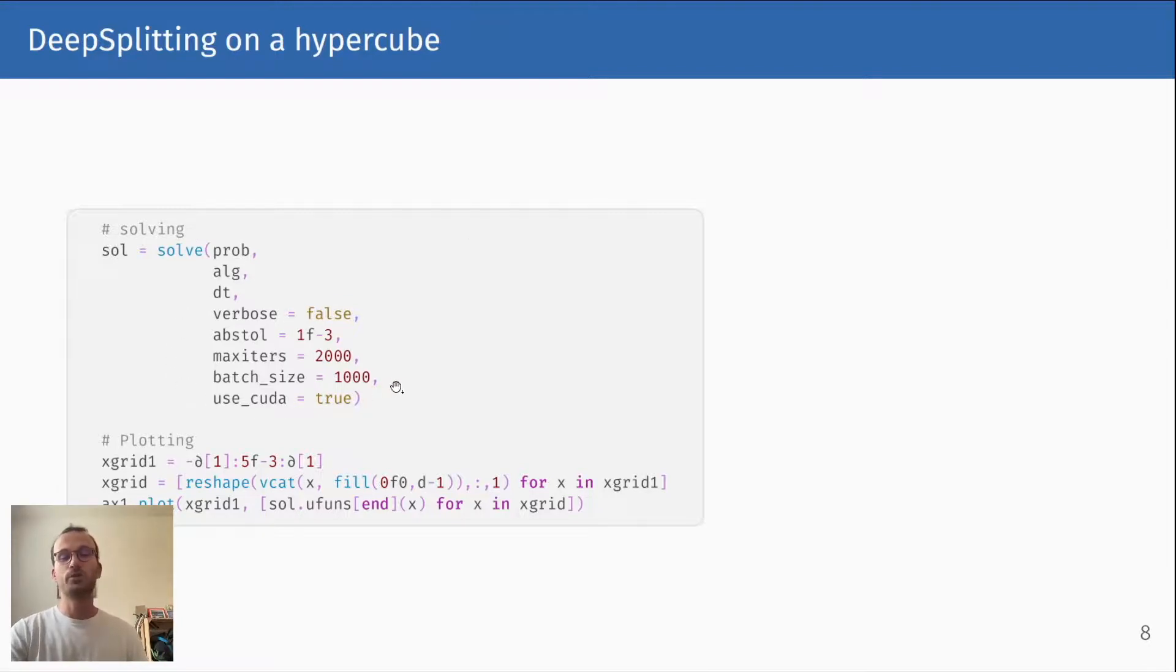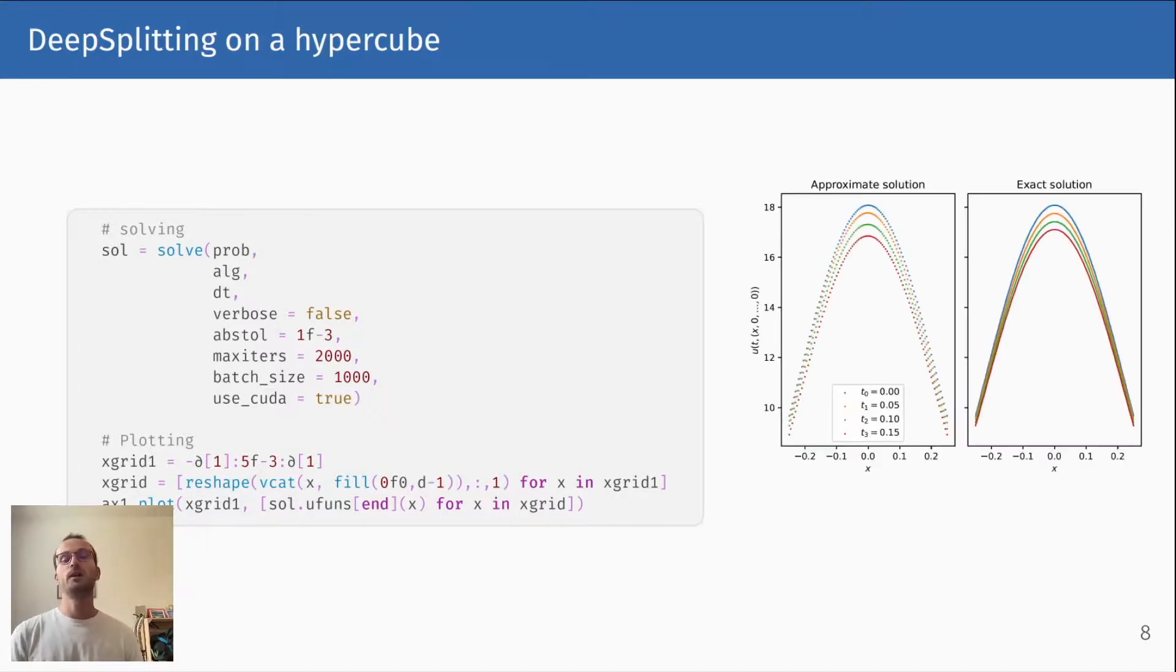Of course, you need to specify how many trajectories you want to simulate and how many iterations you want to perform to train the neural network. After a few seconds, you get the approximation, which I plotted here as a cross-section along one axis. But you have to really think that it's solved over a 10-dimensional domain, which is pretty crazy when you think of it.